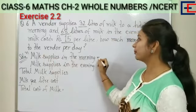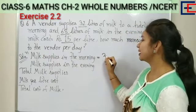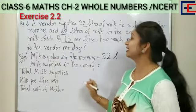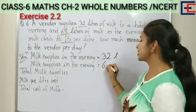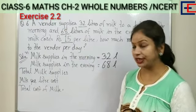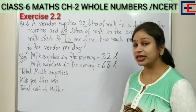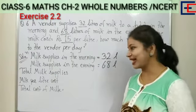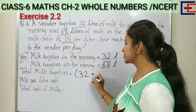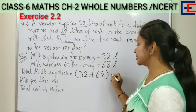Milk supplies in the morning: in the morning, supply is 32 liters. Milk supplies in the evening: in the evening, it is 68 liters. Then the total supply is equal to 32 plus 68 liters.